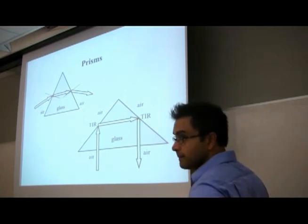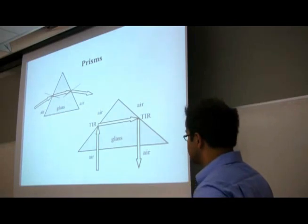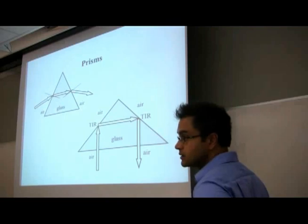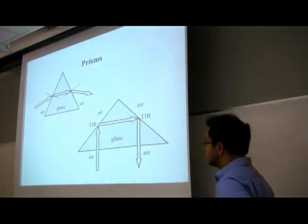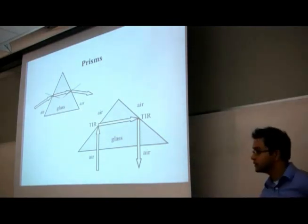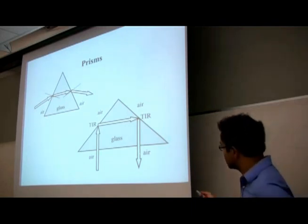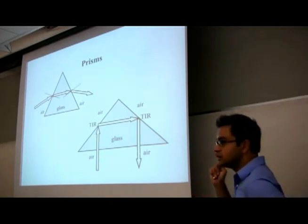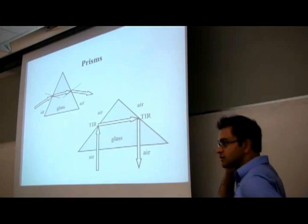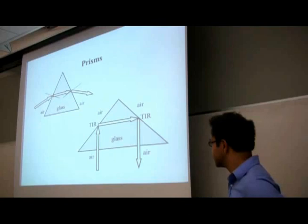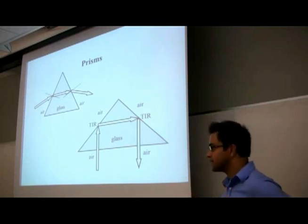This is what's called a corner prism — it sends the beam straight back in the same direction it came from. These are used in physics experiments; one was placed on the moon to reflect laser light back so you can measure the speed of light and do other experiments. You shoot a laser up and it bounces straight back.